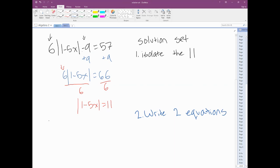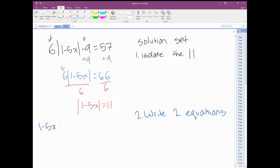Our two equations are going to be 1 minus 5x equals negative 11, and 1 minus 5x equals 11.